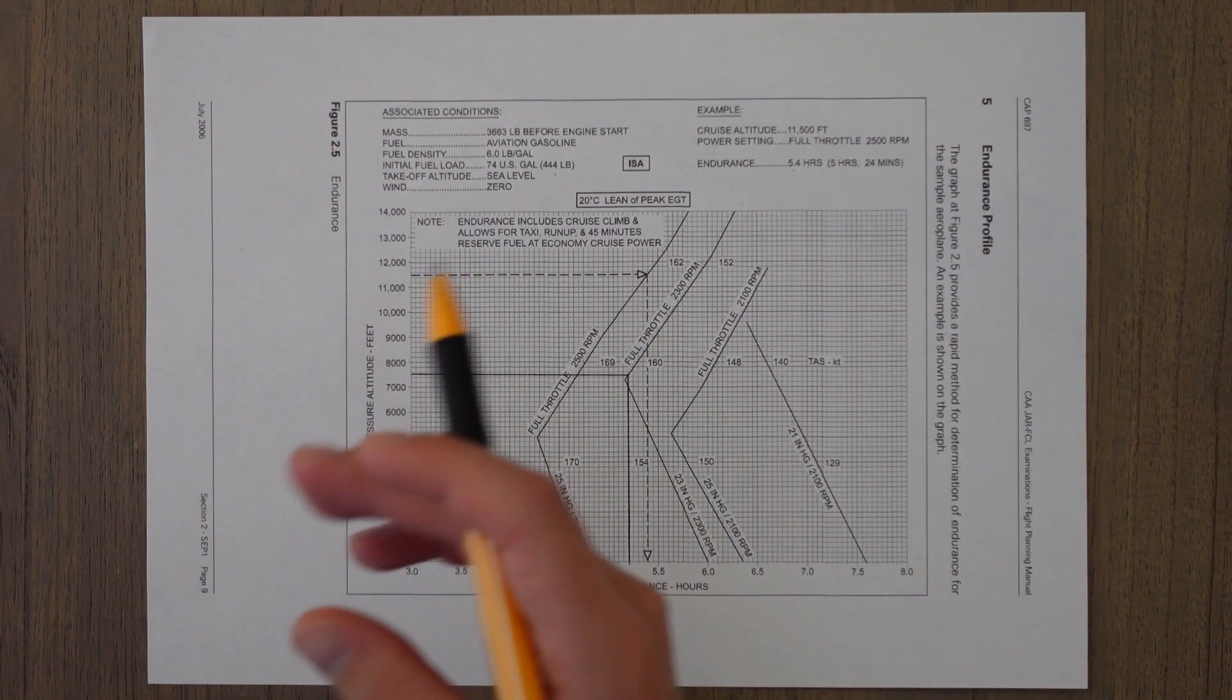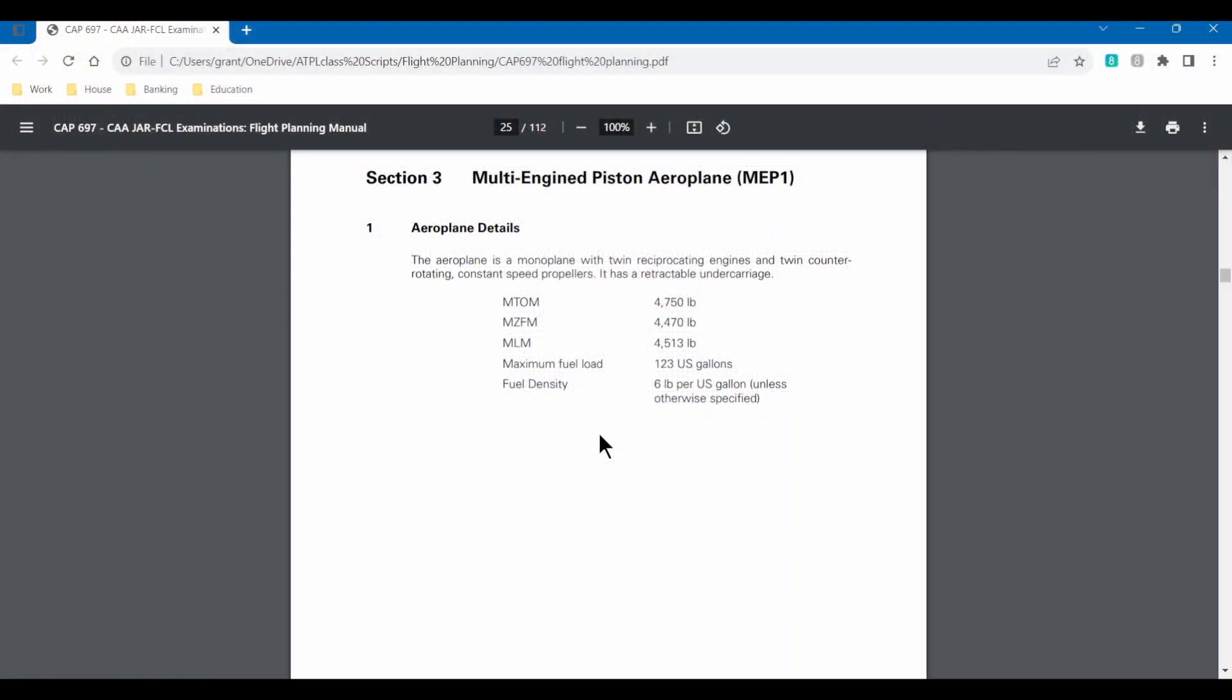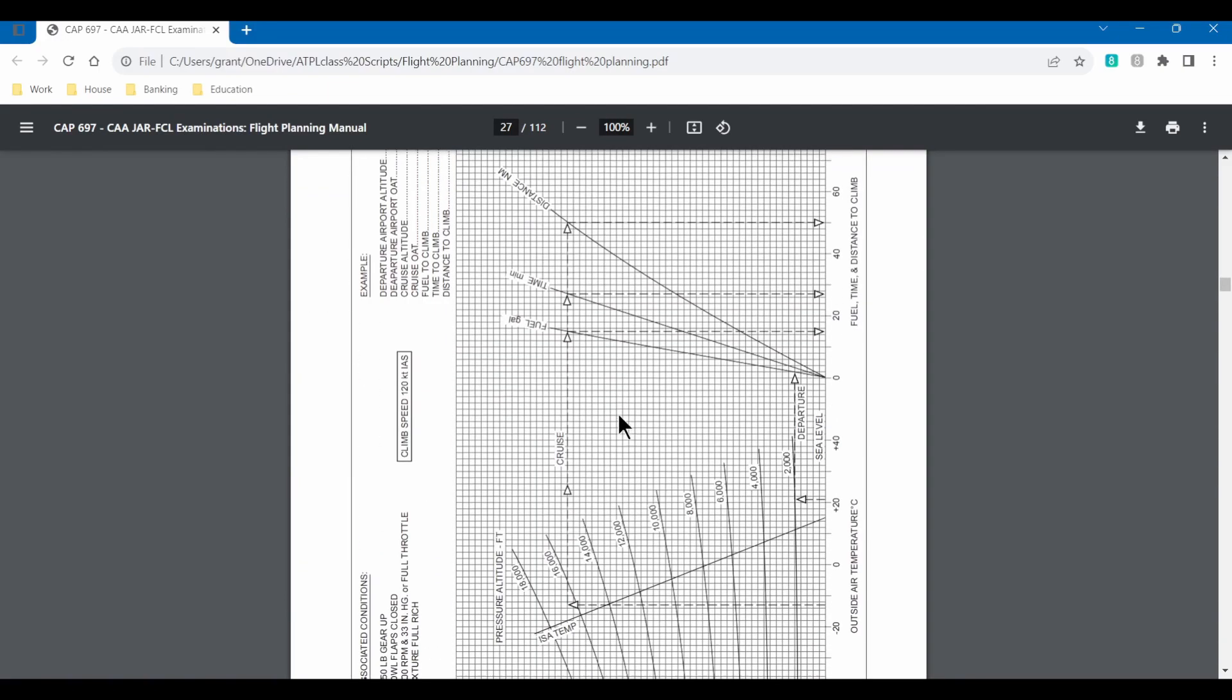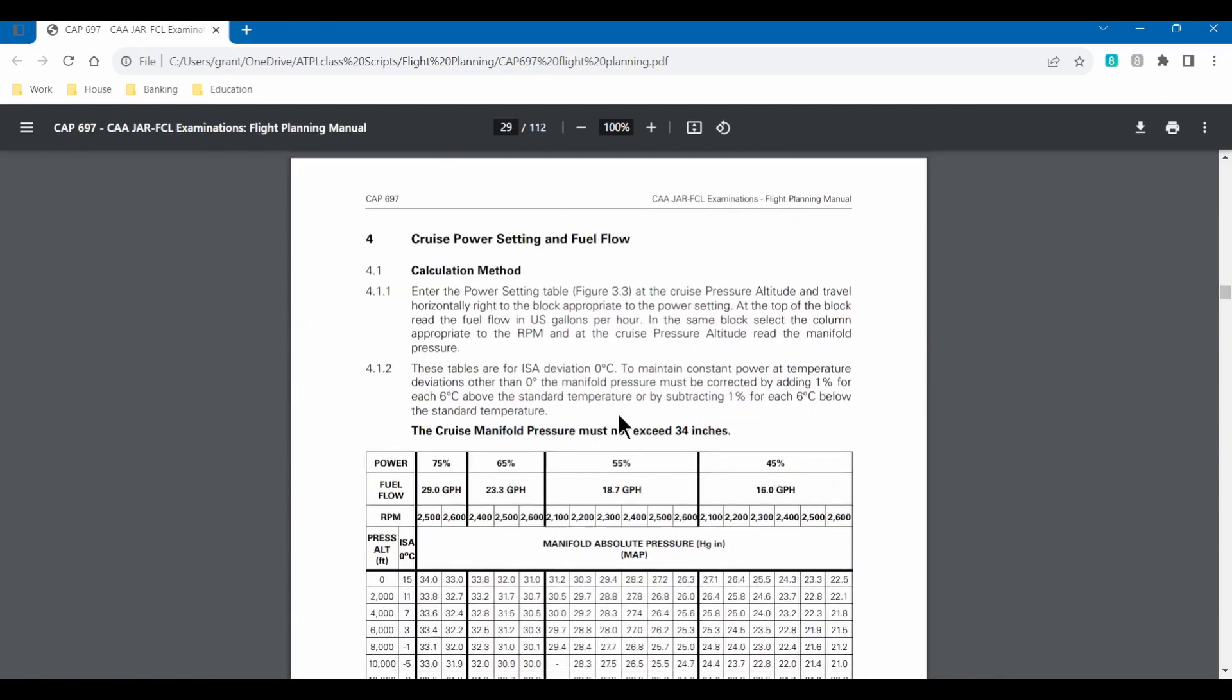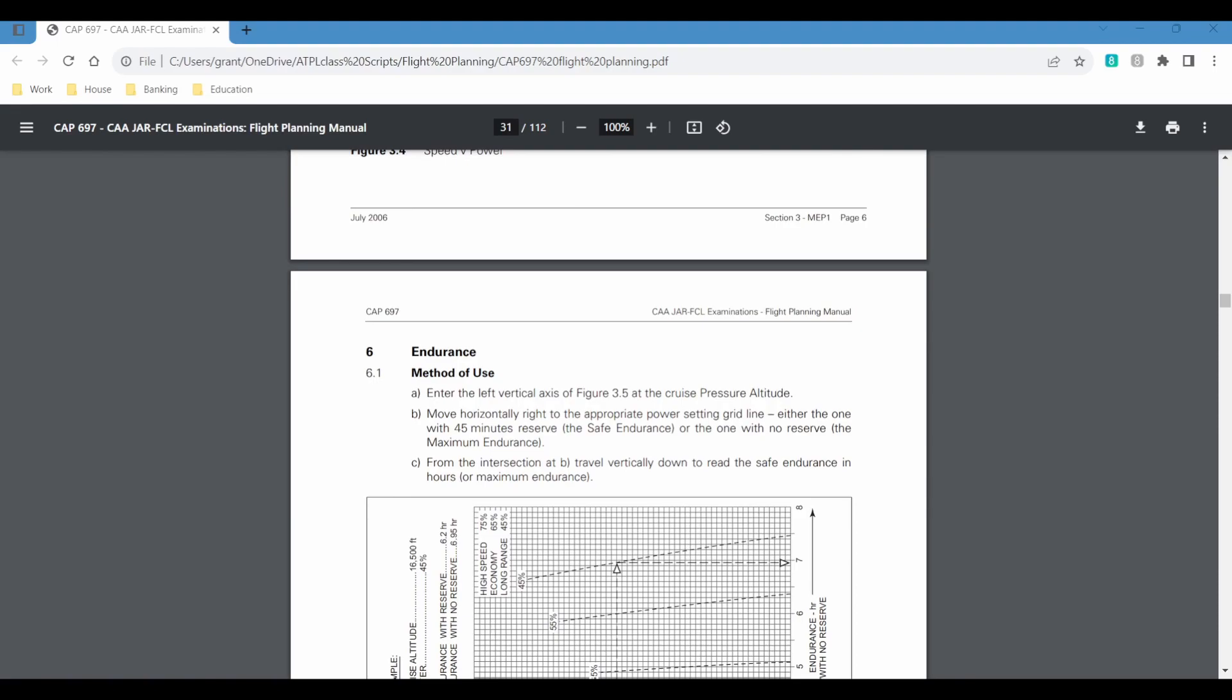So the multi-engine piston aircraft has these basic characteristics with the key addition of that second engine. The graphs aren't that much more complicated here. As before, we'll just look at a few examples from the question bank.